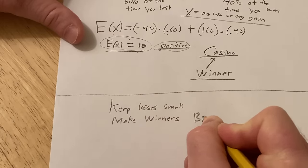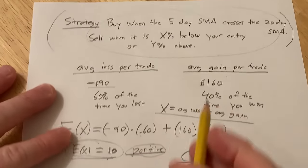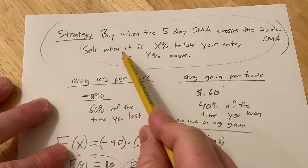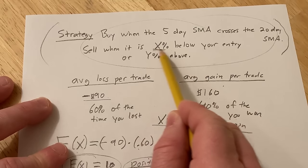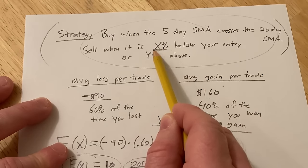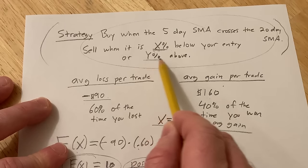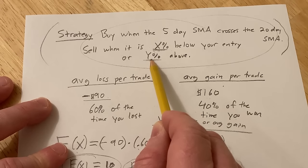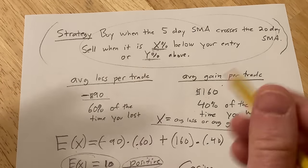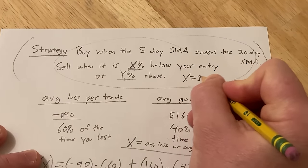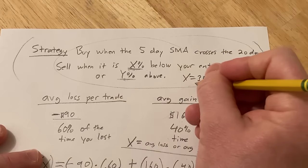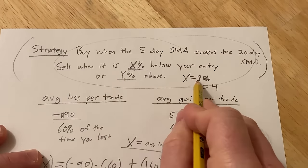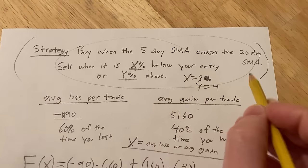And you can do that by adjusting these parameters up here. For example, here it says sell when it is X percent below your entry—so you limit your losses by making this a small percentage. And then sell when it's Y percent above, so typically you make this a bigger number. So as a silly example, maybe X is 3, so 3%, and Y is 4, so 4%. So you're taking a 3% loss and a 4% gain.